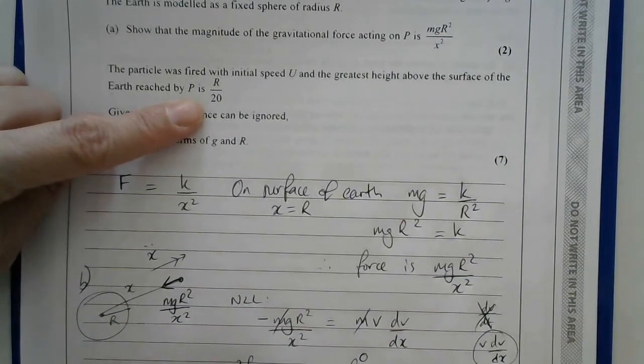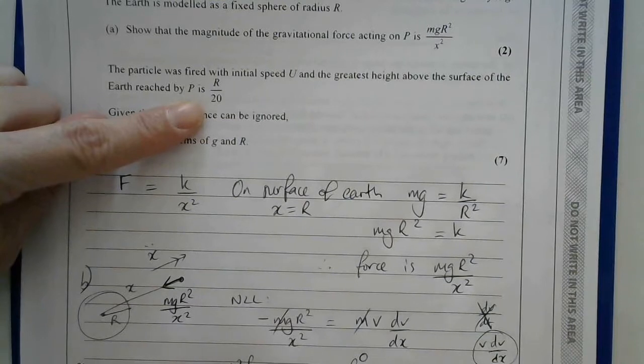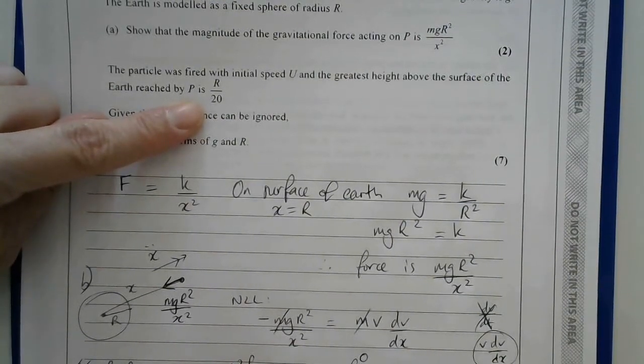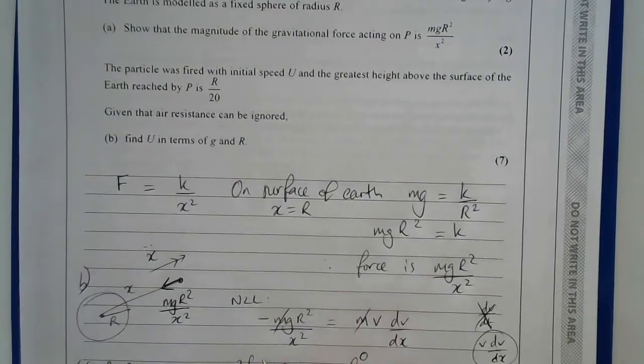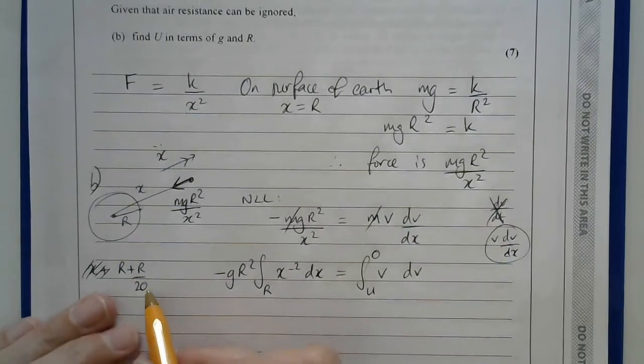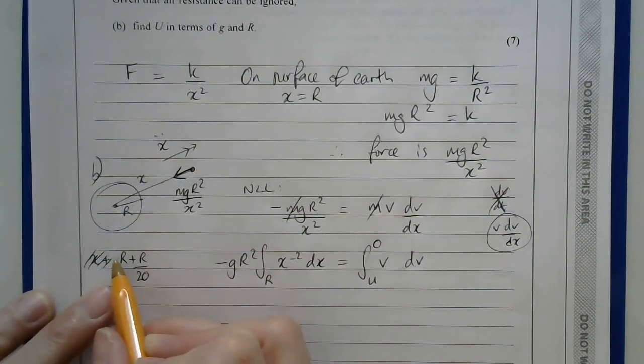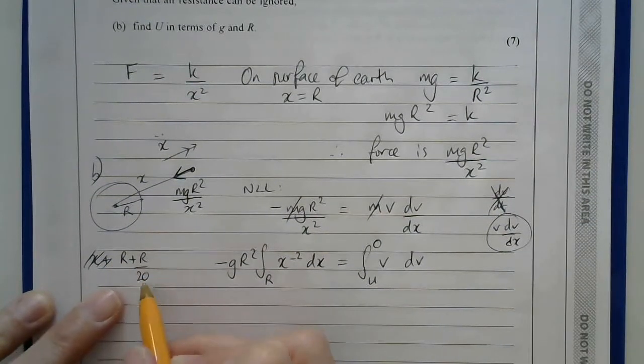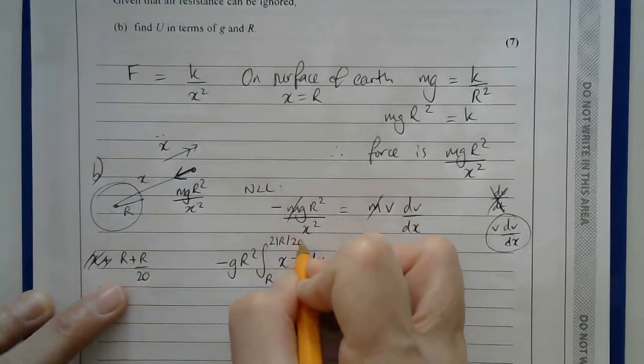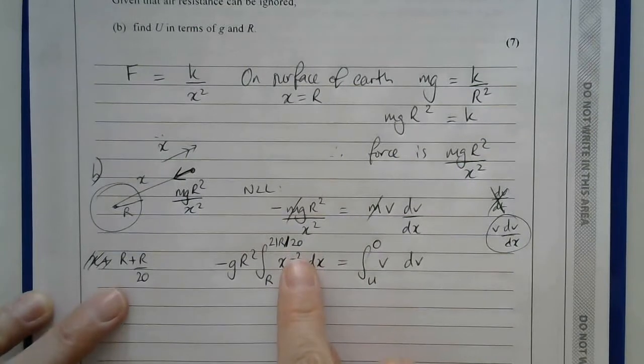Whereas I need to give a value of x which goes from the centre of the earth to where the particle is. So I just need to do x plus, sorry, r plus r over 20, to give me the upper limit of this integral here. So this would be 20r over 20 plus 1r over 20 makes 21r over 20 as the upper limit of my integral.